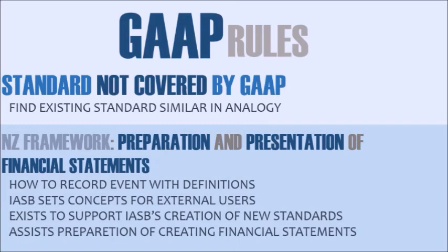There is a presumption that if GAAP is followed the statements are fair, but that does not always hold true. So the new FRA says entities will be allowed to depart from GAAP if they think their financial statements will not be fairly disclosed. Additionally, the term 'true and fair view' has been eliminated from the FRA. The new term we use is now called fair presentation.